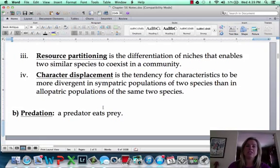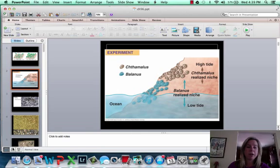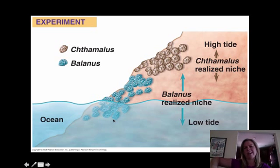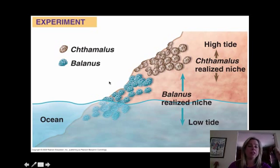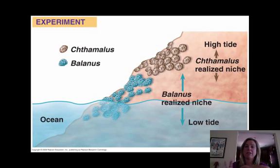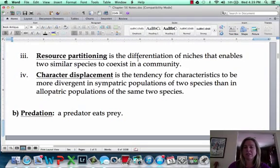One thing that can happen as a result of competition is resource partitioning — that's where species differentiate their niches so they can still coexist in a community. Here's an example with barnacles. There are two species, and they've differentiated: one goes to the high part of the high tide mark, and the other goes to the low part of the low tide mark. So they've changed their niche a little bit so that neither has to go extinct.